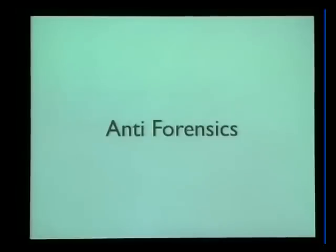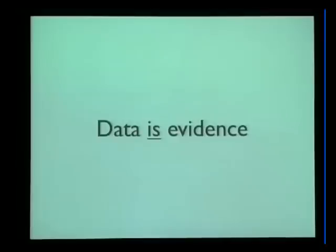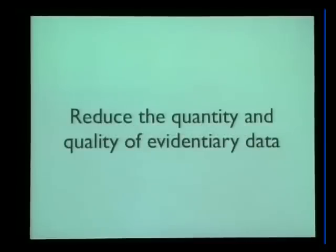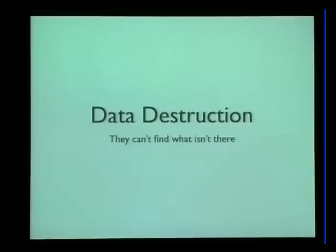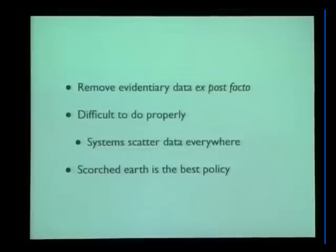Anti-forensics gets a two-slide introduction because it's a lot more complicated. Data is evidence. Everything that you can possibly do on the system leaves some sort of trace behind. Everything you do creates data that needs to be removed or hidden. So your goal when doing anti-forensics is to reduce the quantity and quality of evidentiary data. There are basically three types of strategy you can employ. First off, we have data destruction — they can't find what isn't there. If you destroy the data, there's nothing to be recovered and used against you in a court of law. This comes down to removing evidentiary data ex post facto — which means after the fact. I looked it up on Google.